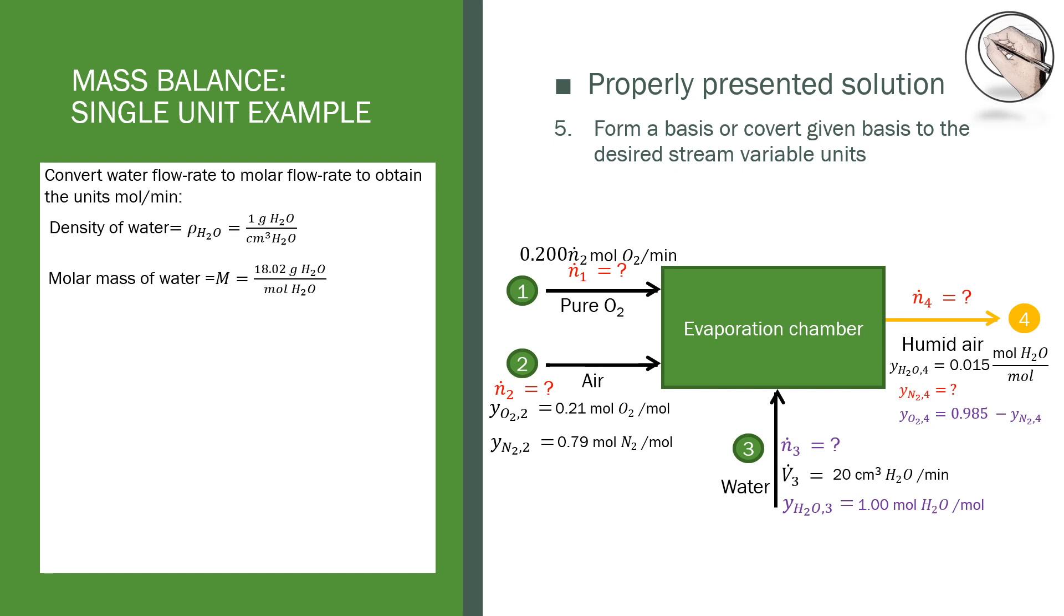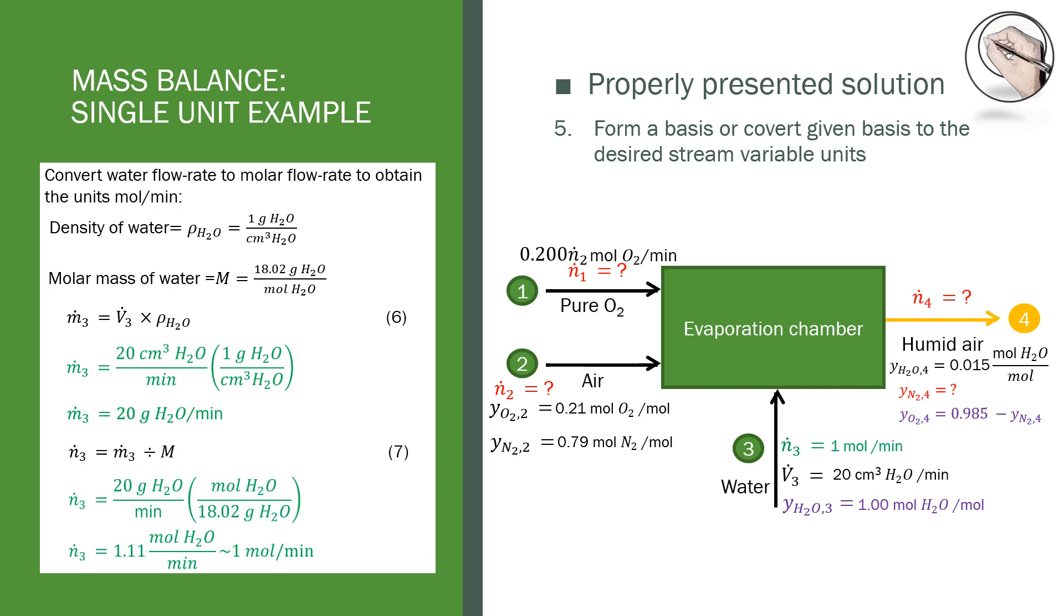Using the density and molar mass of the components in the stream, which is just water in this case, the density helps us to calculate the mass flow rate of stream 3, and the molar mass helps us to find the molar flow rate of stream 3. Forming a basis can also affect your degree of freedom analysis as it usually gives you enough tools to solve the problem.